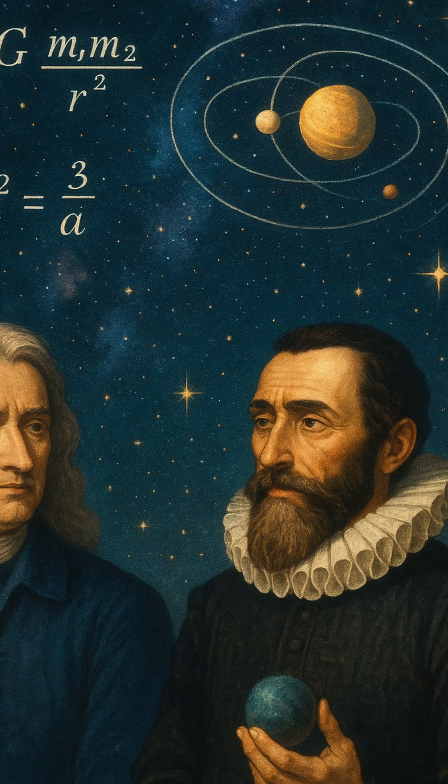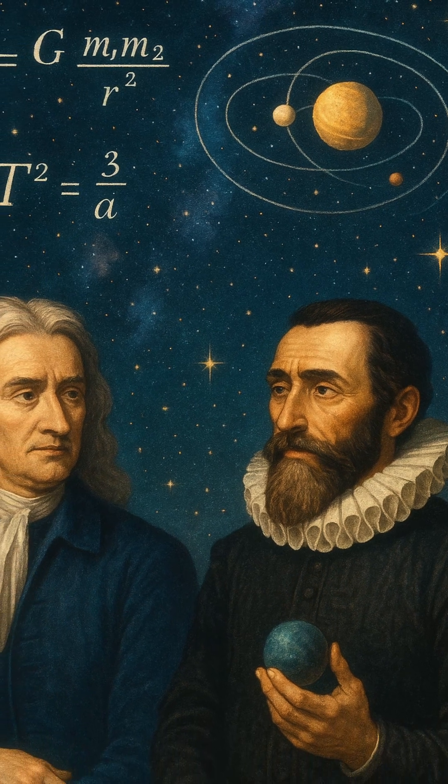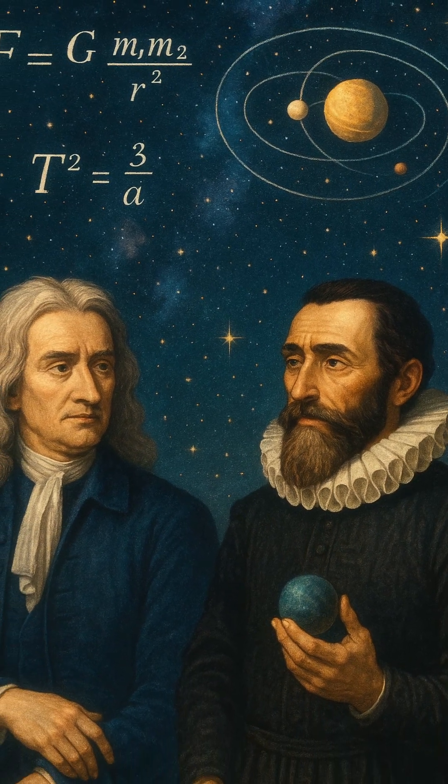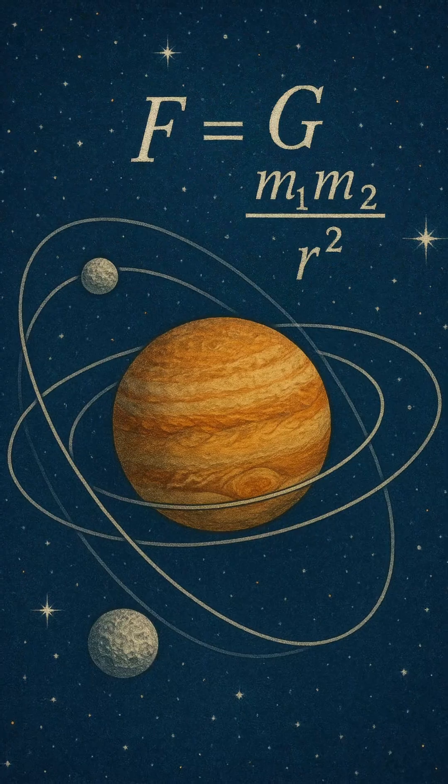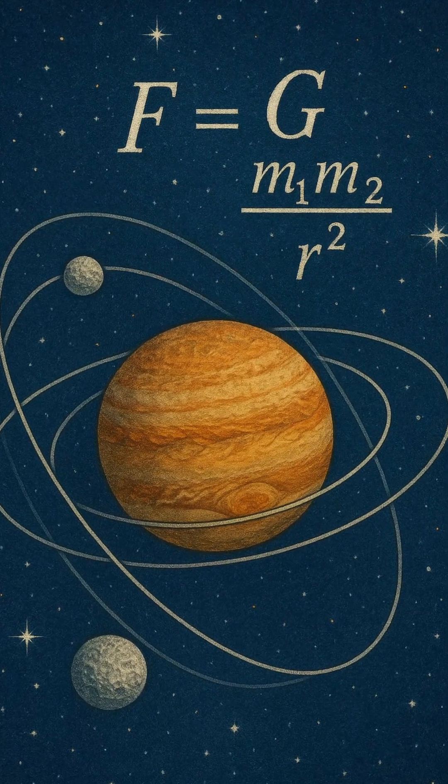And the answer? It all starts with gravity. Planets don't exist in isolation. They tug and pull on everything around them, especially their moons. That invisible tug is our clue.